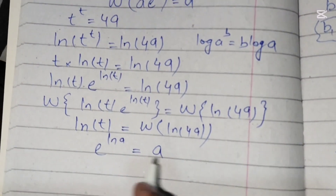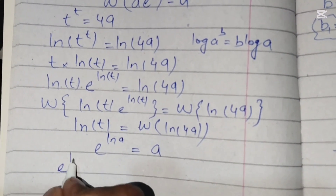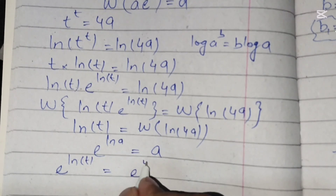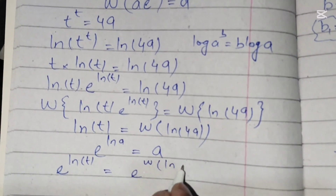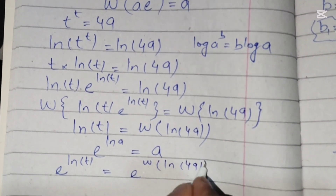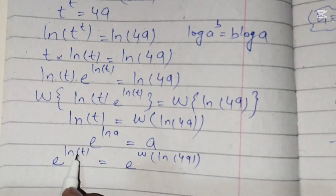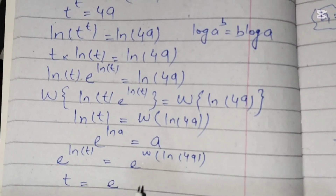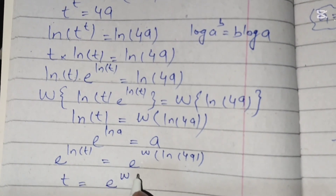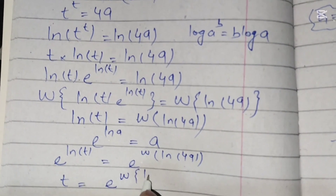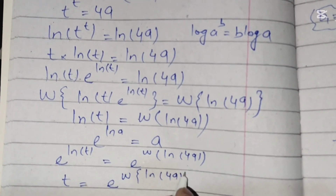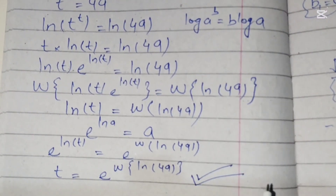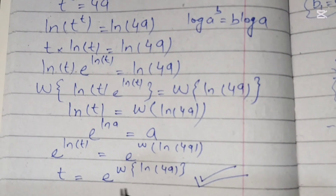We know that e^(ln a) = a, so taking e on both sides: e^(ln t) = e^(W(ln 49)), which gives t = e^(W(ln 49)). This is the final answer for t, obtained using the Lambert W function.